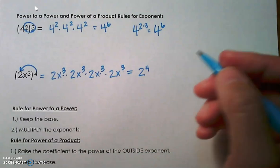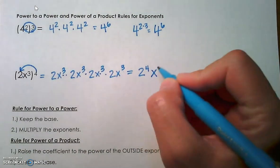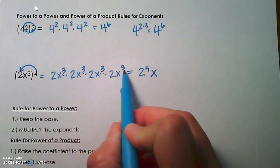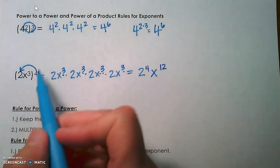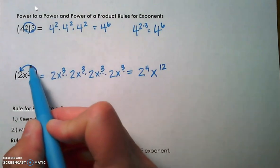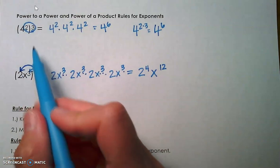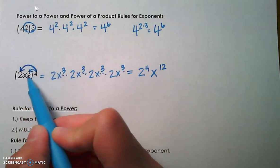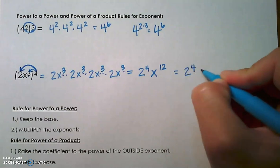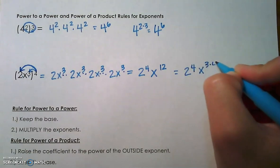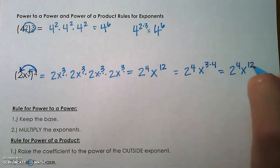Remember the product rule: keep the base, add the exponents. We would add those 3's together because they're being multiplied: x to the 3, 6, 9, 12. Our power of a product rule says to distribute the 4 to the coefficient and then, like we did in the first example, multiply the outside times the inside exponent. So that's going to be 2 to the 4th, x to the 3 times 4, which gives us 2 to the 4th, x to the 12th.